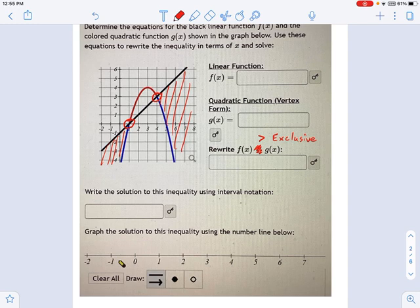So those are going to be holes right there, or open circles. So the way we're going to say this is negative infinity. Again, it goes to 1, but it's a curvy parentheses because we do not include 1. Then we pick up again at 4 and we go out to infinity.